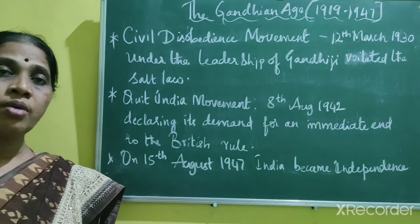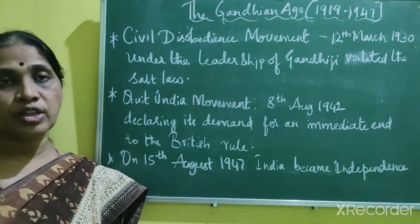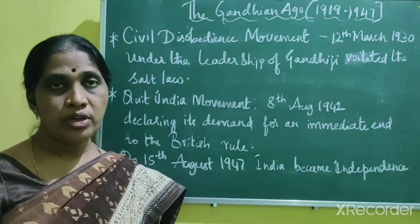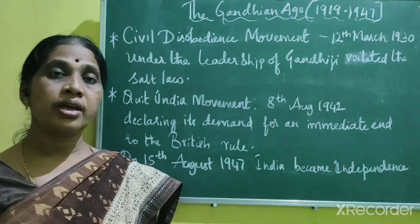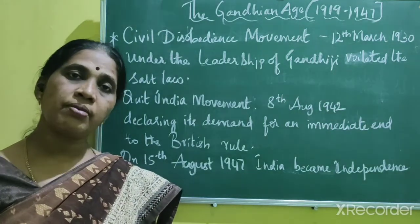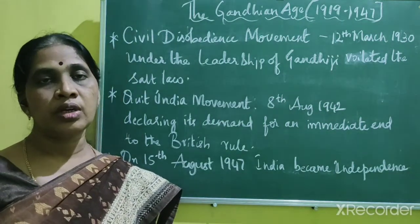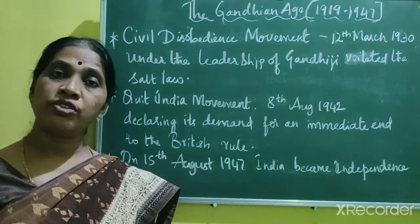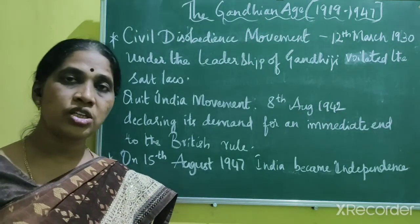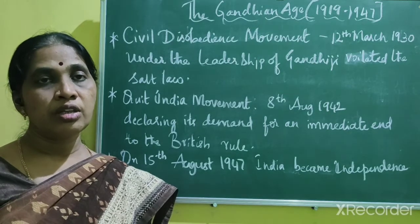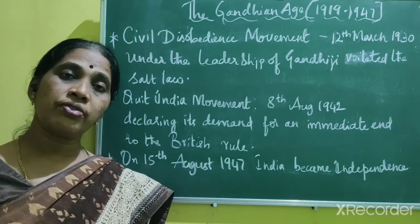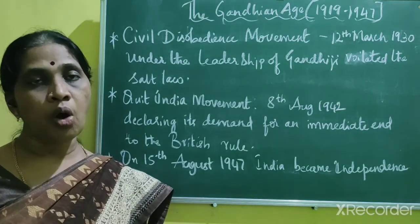On 16th August 1946, Muhammad Ali Jinnah announced a Direct Action Day to press the demand for Pakistan. In February 1947, Lord Mountbatten became the Viceroy and made a last attempt to bring the Muslim League and Congress to a compromise, but it failed. He then announced that the British would transfer power with the creation of a separate country of Pakistan, and the formal transfer of power would be made on 15th August 1947. The Day of Independence was celebrated throughout the country.